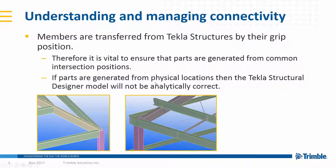Intersection points can be grid intersections, construction line positions, or even the center of column parts. The overriding rule is that parts cannot be generated from a position used for detailing purposes — for example, parts modelled to the face of a supporting member's flange. If parts are created from a location which is physically but not analytically correct, the resulting Tekla Structural Designer model will not be analytically connected and will most likely fail any validation processes performed.